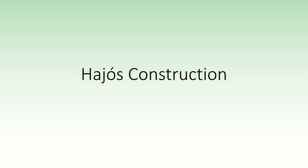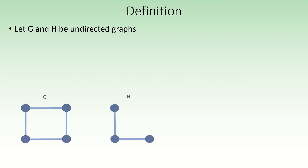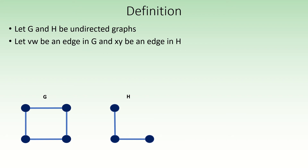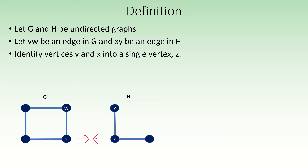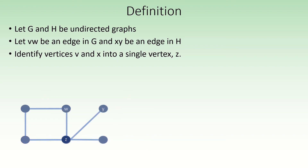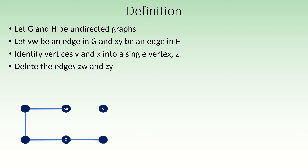The Hayosh construction is defined as follows. Let g and h be undirected graphs, and vw an edge in g and xy an edge in h. Now identify vertices v and x — that is, merge them into a single vertex z. Next, delete the original chosen edges zw and zy. Finally, add a new edge between vertices w and y.